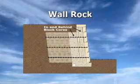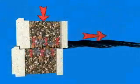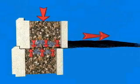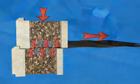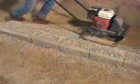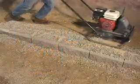Wall rock serves many purposes in a wall project. When added to the block cores, it increases the structural stability, locking the blocks and grid together to form a rock-lock connection. It also allows for good compaction inside and around the blocks and prevents settlement directly behind the block.